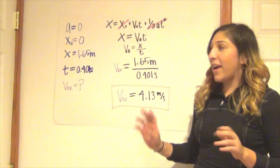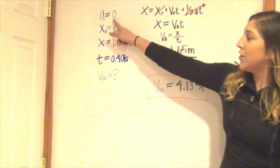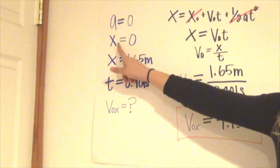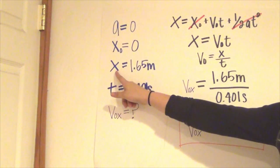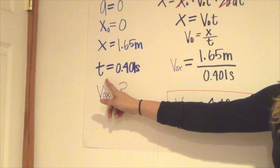Now we're going to solve for our x components. We know that acceleration equals 0, initial x is 0, and final x is 1.65 meters which was the width. Given that we already found time was 0.401 seconds, now we're going to solve for the initial velocity.